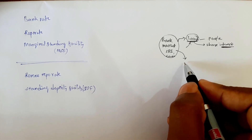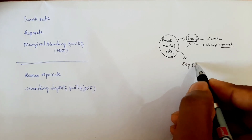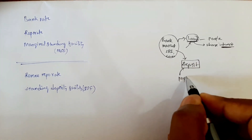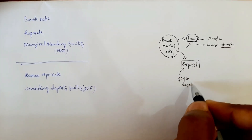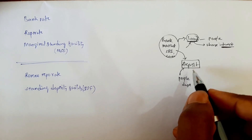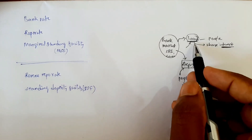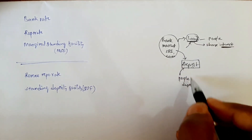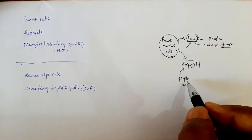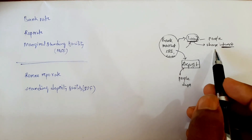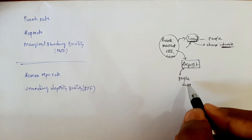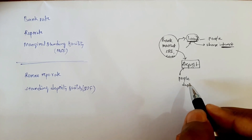To give loans, where do the banks get money? One source is deposits — people deposit money with the bank, and by using these deposits, the bank lends loans to the people. But is people's deposits sufficient to give loans? No, it is not sufficient, because at any point in time people can withdraw money from the bank.